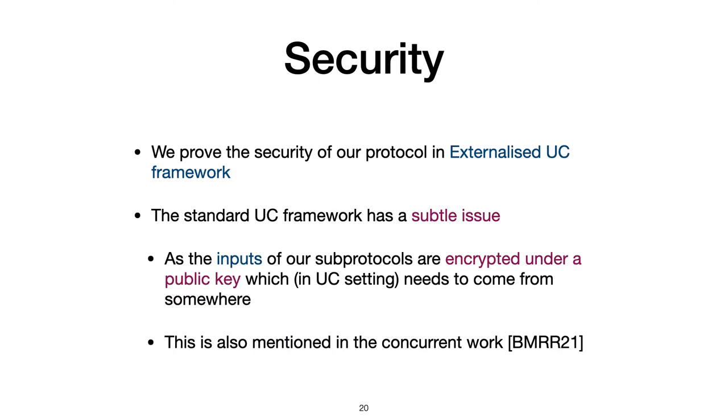We prove the security of our protocol in externalized UC framework. The standard UC framework has a subtle issue. We prove that because the inputs of our sub-protocols are encrypted under a public key, which needs to come from somewhere in a UC setting. So it's some kind of a definitional problem. This is also mentioned in the concurrent work BMR21. And they get around this by only proving the final protocol instead of the sub-protocols. We choose to prove the security in a generalized UC framework, externalized UC framework, which has a global setup of public key infrastructure. So we can get around this sort of issue.